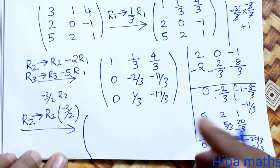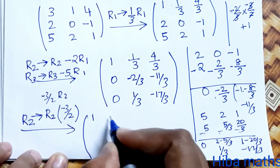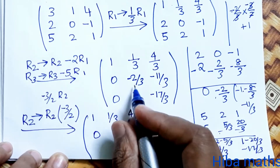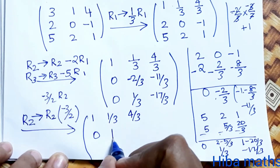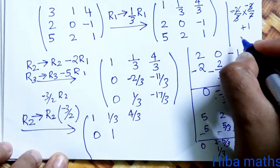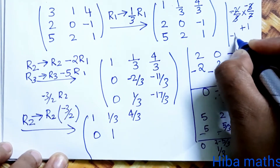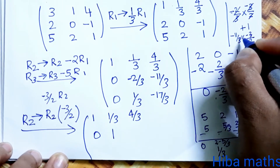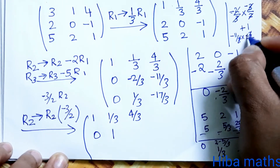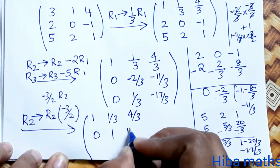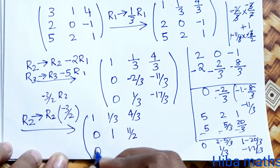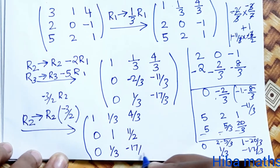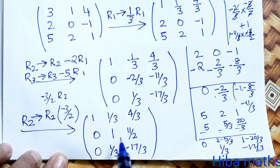After row operations, row 1 becomes [1, 1/3, 4/3], and R2 entry with -11/3 multiplied through gives 11/2. R3 has entry -17/3. Calculations proceed: 1/3 times 11/2 gives 11/6.